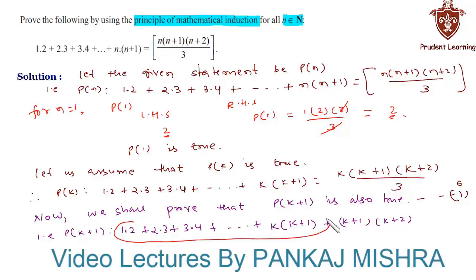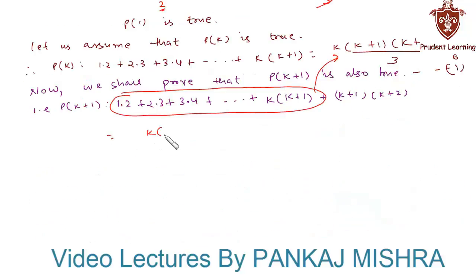Now from equation 1 we have the value of this quantity as k(k+1)(k+2)/3, so we'll substitute it, which gives us k(k+1)(k+2)/3 plus (k+1)(k+2). Taking 3 as LCM, we get [k(k+1)(k+2) + 3(k+1)(k+2)]/3. Now taking (k+1)(k+2) common on the numerator, we have (k+3)/3.